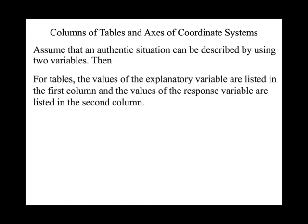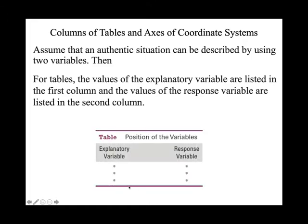For tables, the values of the explanatory variable are listed in the first column and the values of the response variable are listed in the second column. Every time you see a table with two sets of data, the first column represents your explanatory variable — we use X to represent it — and the second column represents your response variable, represented by Y.